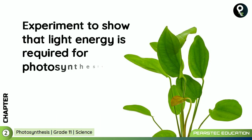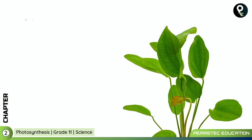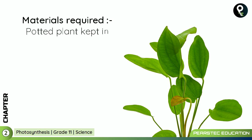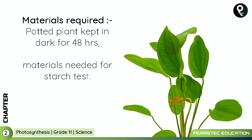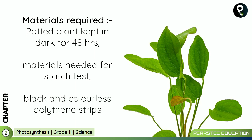Experiment to show that light energy is required for photosynthesis. Materials required: a potted plant kept in dark for 48 hours, materials needed for the starch test, and iodine solution — we can use iodine solution to test for starch. We also require black and colorless polythene strips.